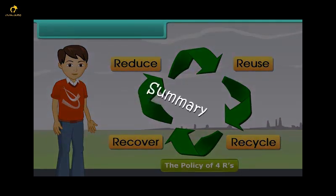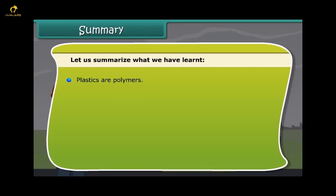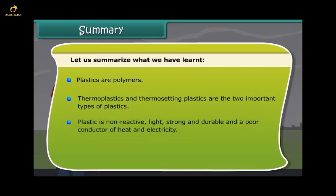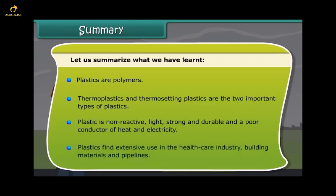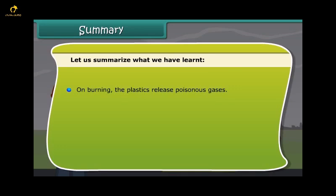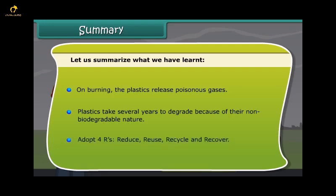Let us summarize what we have learnt. Plastics are polymers. Thermoplastics and thermosetting plastics are the two important types of plastics. Plastic is non-reactive, light, strong and durable, and a poor conductor of heat and electricity. Plastics find extensive use in the healthcare industry, building materials and pipelines. On burning, plastics release poisonous gases. Plastics take several years to degrade because of their non-biodegradable nature. Adopt the 4 R's: reduce, reuse, recycle and recover.